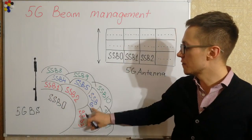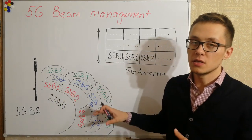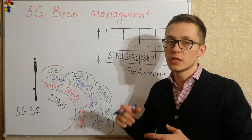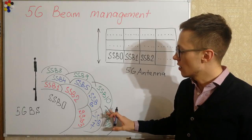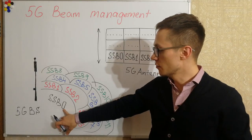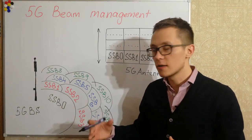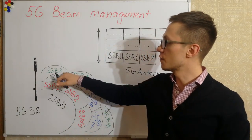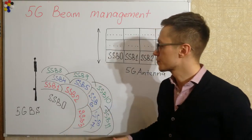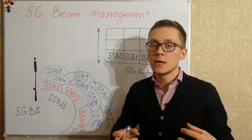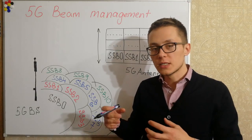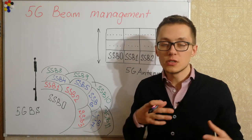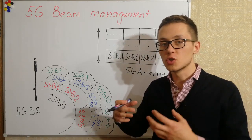SSB with index 4, 5, 6, 7 can be up-tilted even more, and SSB 8, 9, 10, 11 can serve the far area in order to provide service there. We can also define that SSB 0 beam would be very wide, while SSB 8, 9, 10, 11 would be very narrow beams because they serve the far area. By this example we can see that we can define coverage not only by sector but also by beams.